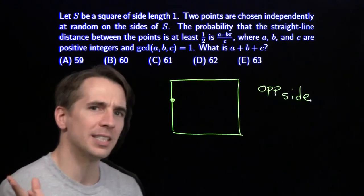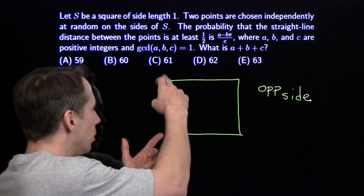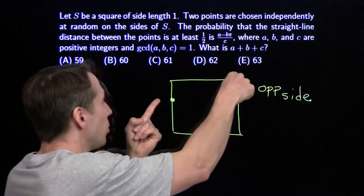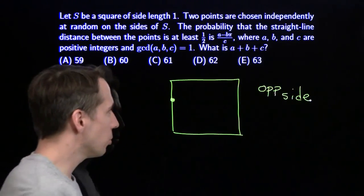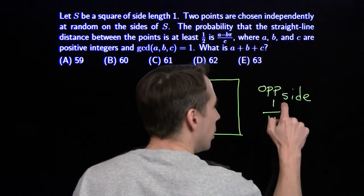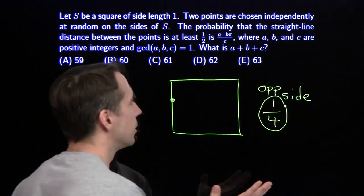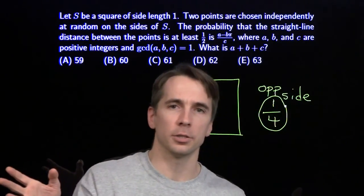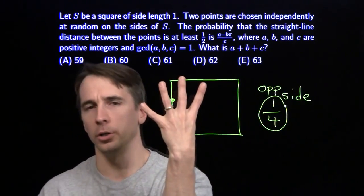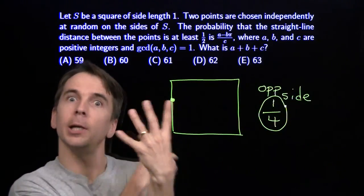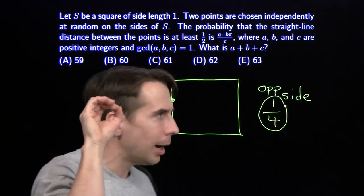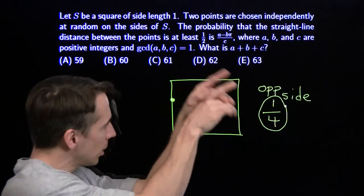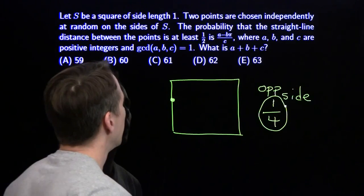The points are at least a half apart. Now, how often does that happen? No matter what side we pick the first point on, the probability that the second point is going to be on the opposite side is just a quarter, because the second point is equally likely to end up on any one of the four sides. There's only one opposite side. So one quarter of the time, the two points will end up on opposite sides and they're guaranteed to be at least a half apart. What about the corners? There are four corners, but there are infinitely many possibilities for where we could choose a point, so we're not going to worry about the corners.